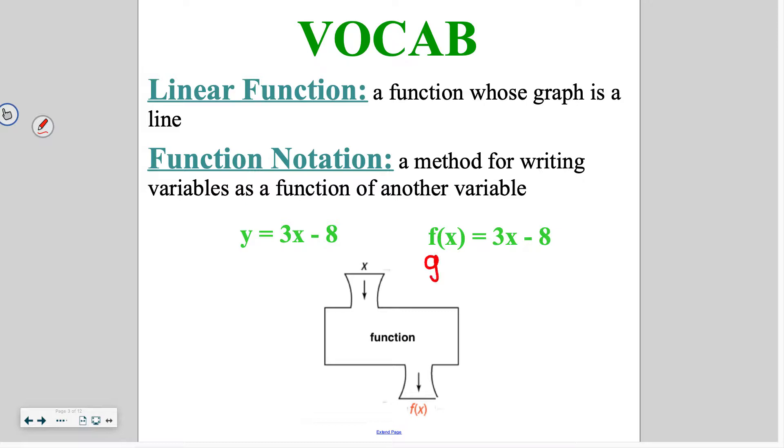I could have written function g of x equals 3x minus 8. The reason we often do this is because we're going to start dealing with more than one equation at a time, and we want to be able to tell the difference between our equations. So I could have the equation f of x equals 3x minus 8, and I might have a different equation in my problem that says g of x is negative 2 thirds x plus 4. So it's a way that we can use multiple equations, but have a way to differentiate between which one you are using.